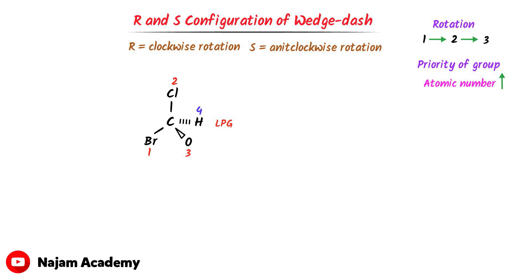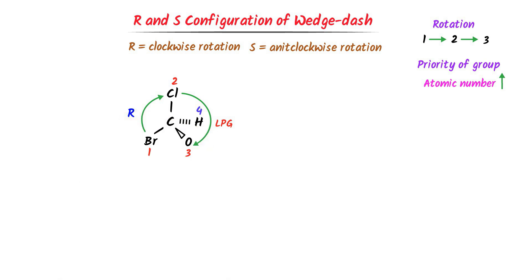Now according to the rule, we go from 1 to 2, then 2 to 3, and we skip the fourth position. We can see that this is clockwise rotation, so the configuration of this organic compound is R. LPG or hydrogen is present at the dash position, so the result is R configuration. Thus the configuration of this organic compound is R.